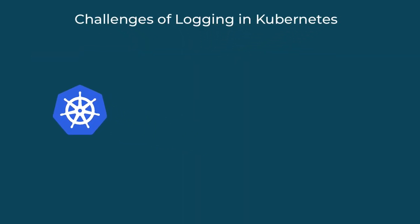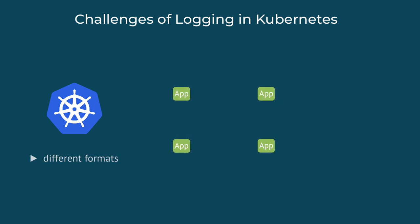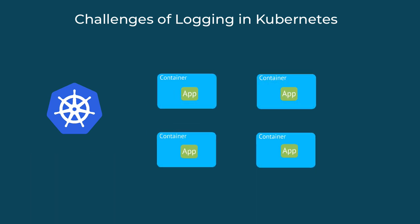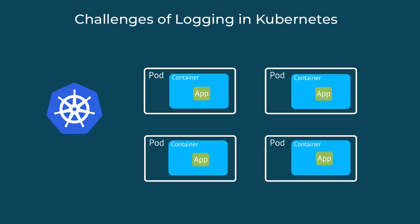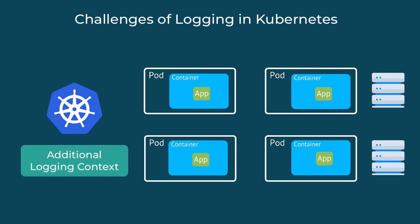The challenge of logging in complex environments like Kubernetes is that you have many different applications which produce logs in different formats. Each application is running in containers, which run in pods, which then run on Kubernetes nodes. So in addition to the log message and the application name, we have all this additional information about where the log is coming from. If you have five replicas of the same application, you want to know which pod replica on which node produced this log.